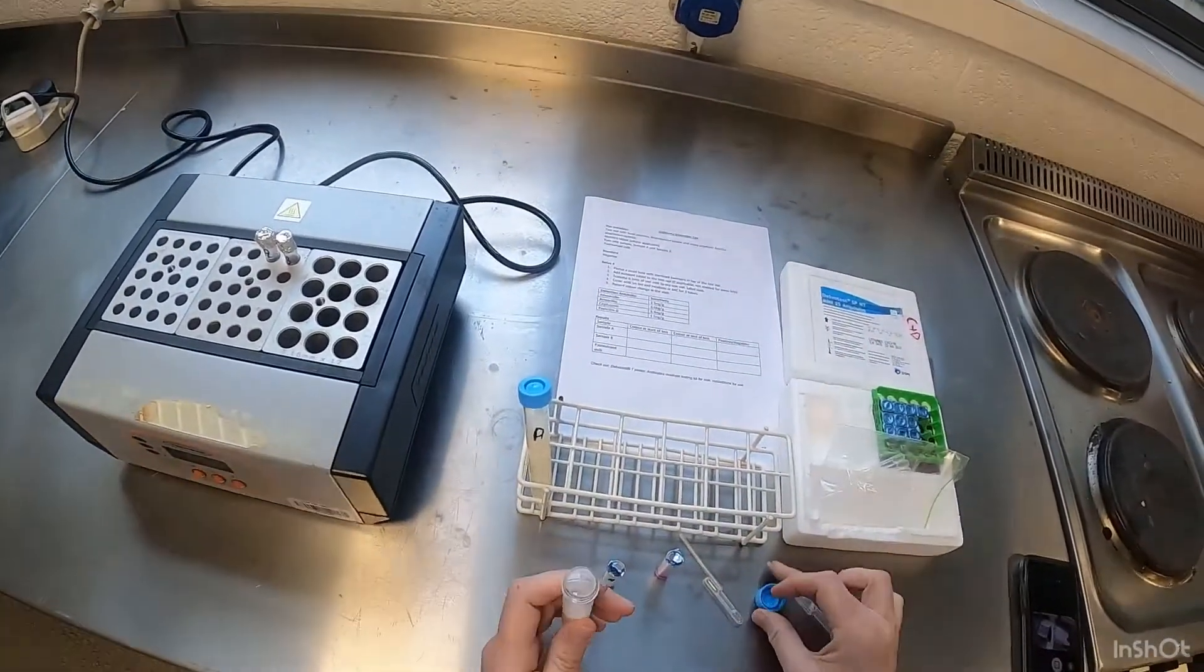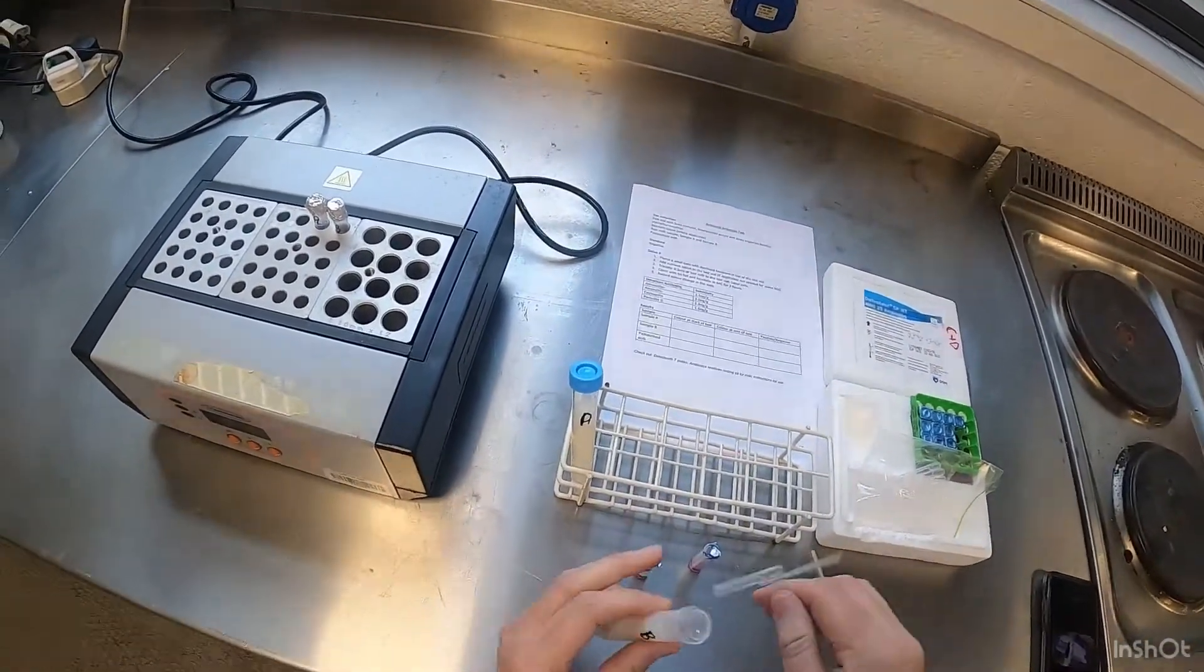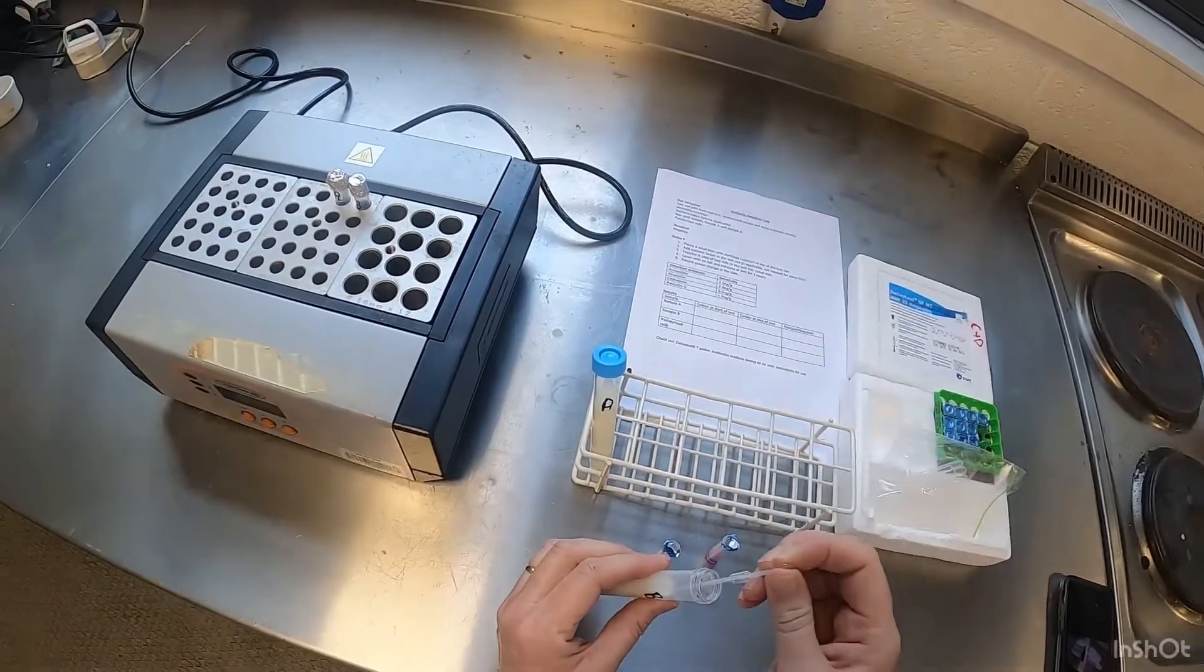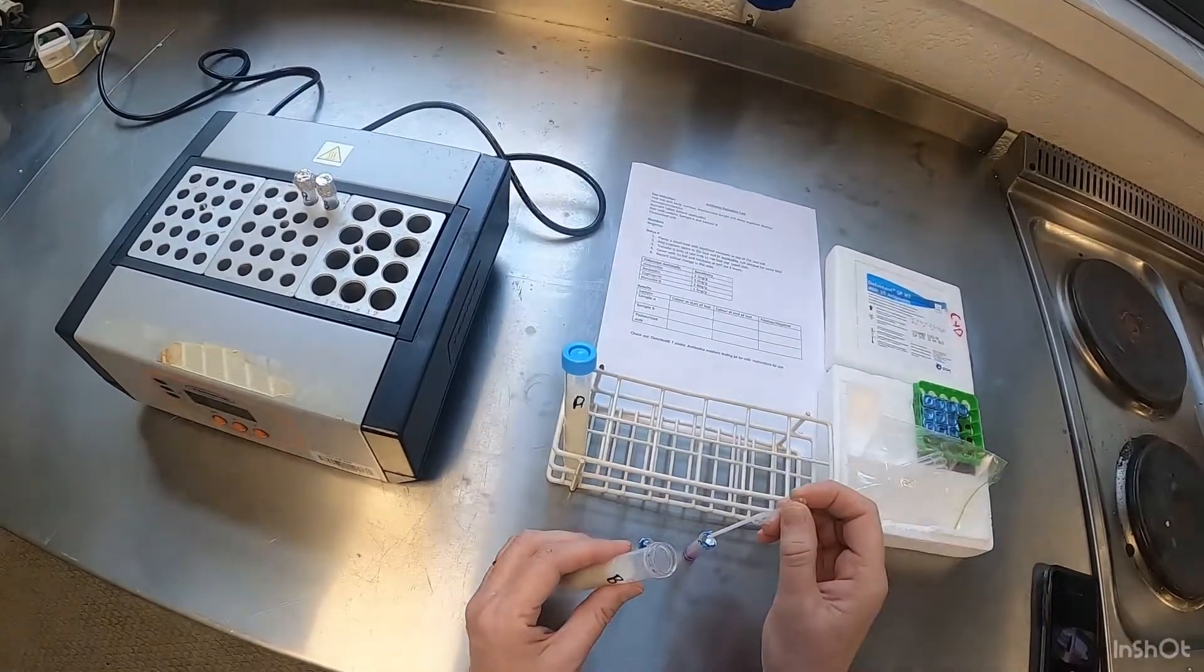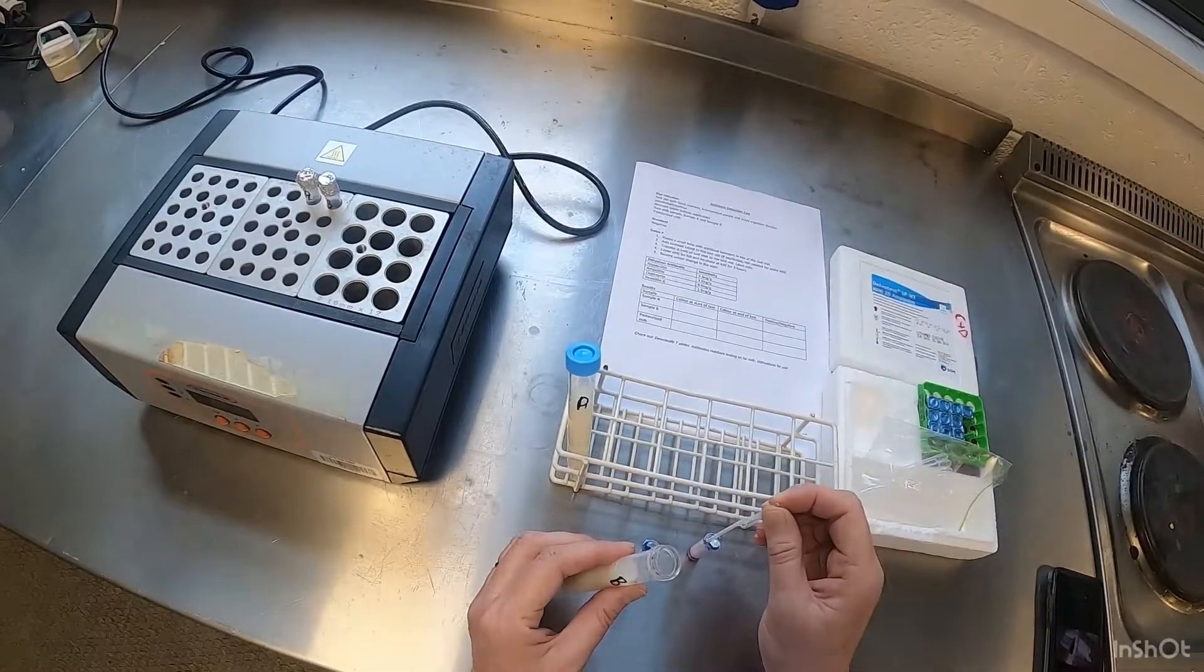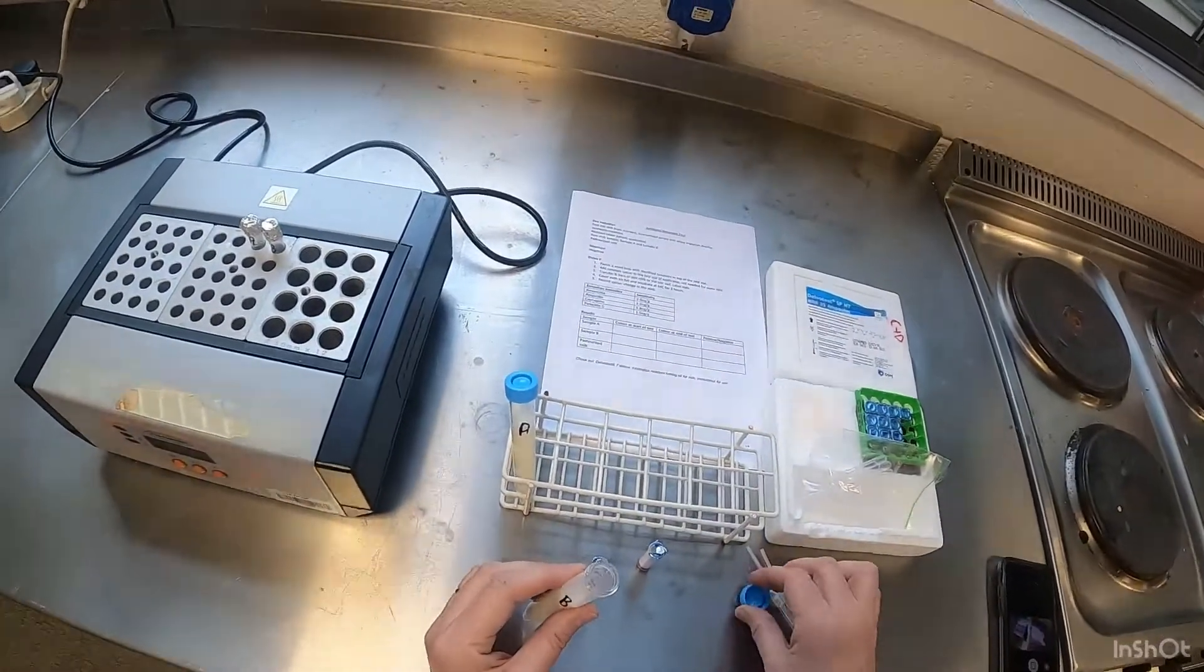Sample B. I'm going to use a different pipette for that because we don't want any cross-contamination. Again, I'm just going to lift a sample of that, place it into our ampoule as such.